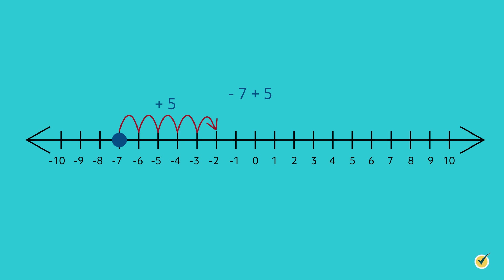Let's practice by adding negative 7 plus 5. We will start at negative 7, and since the operation is addition, we will move to the right 5 spaces. As you can see, we land on negative 2. Therefore, negative 7 plus 5 equals negative 2.